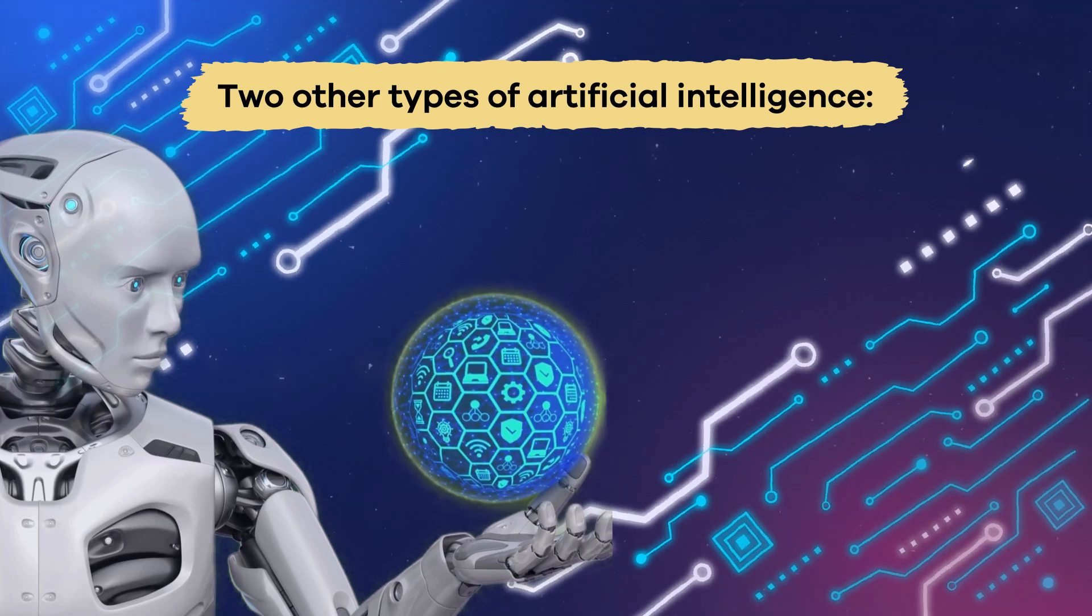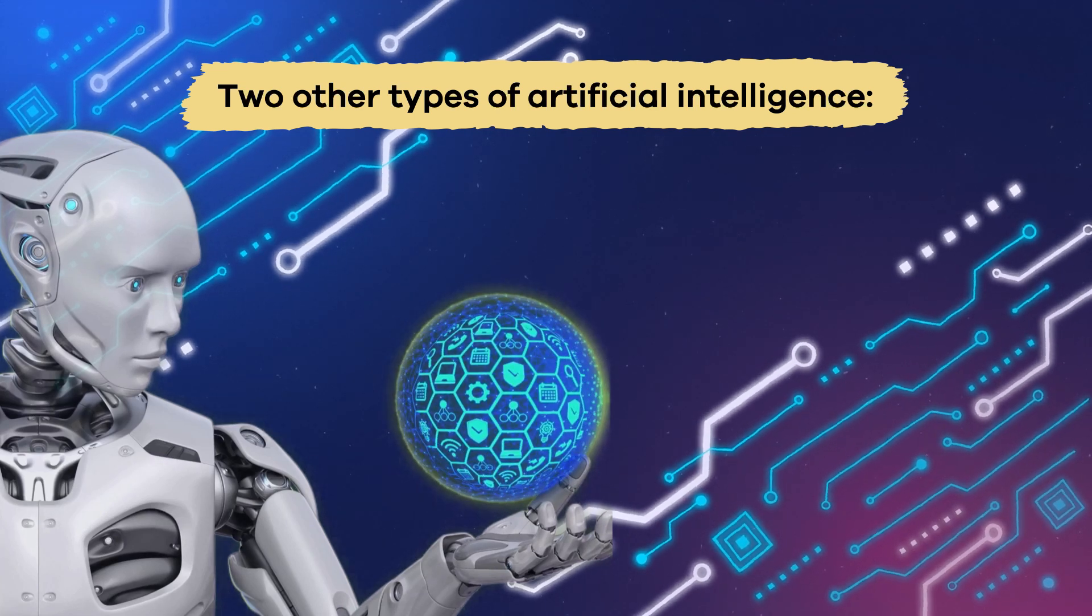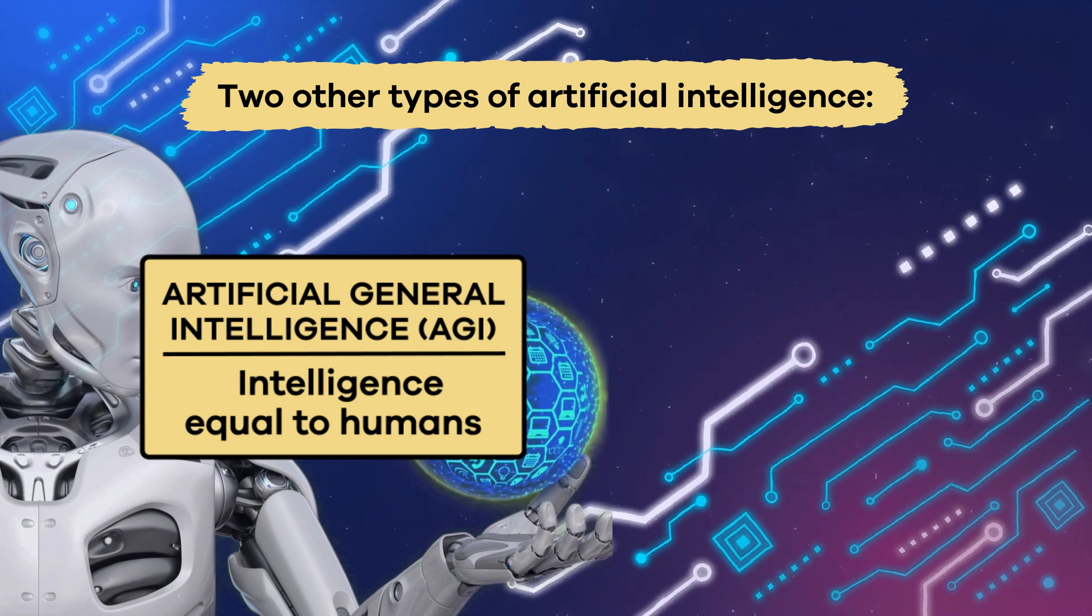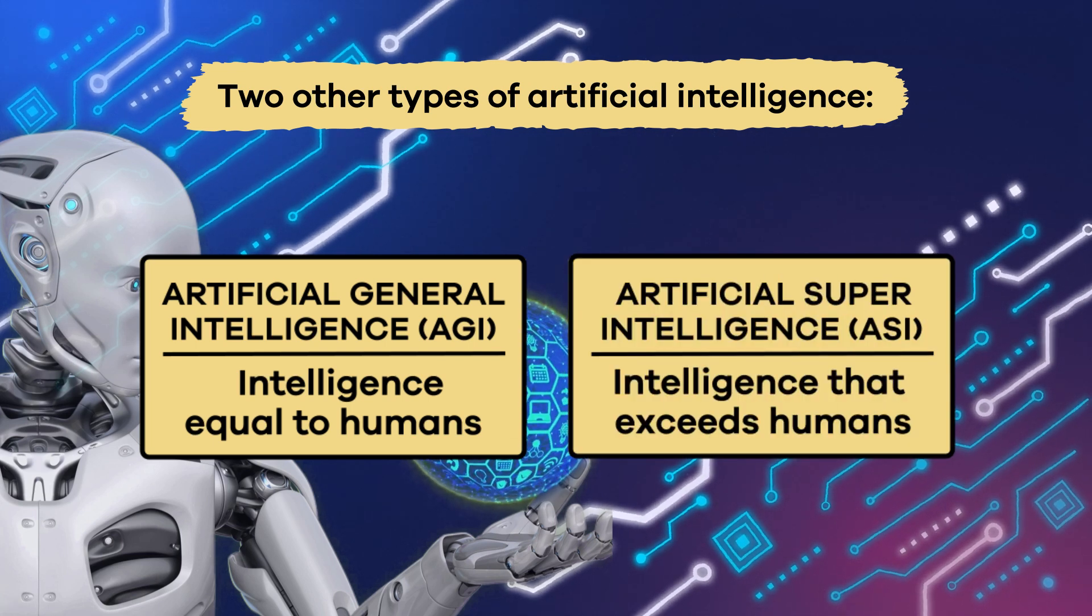There are two other types of artificial intelligence: AGI, or Artificial General Intelligence, and ASI, which means Artificial Super Intelligence.